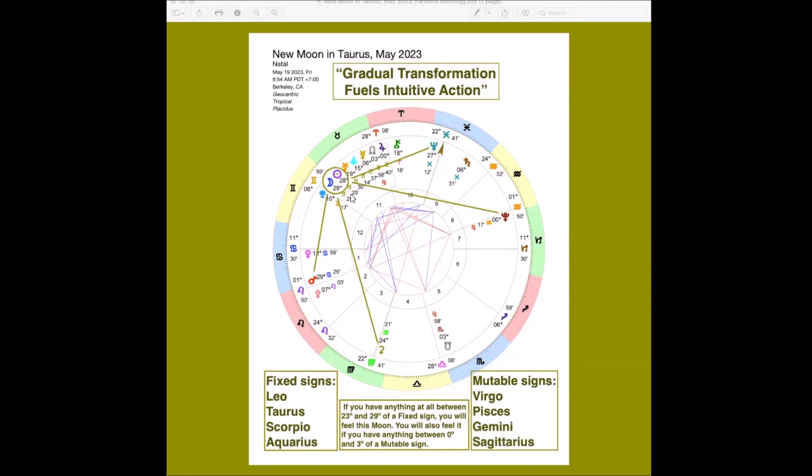Well, the title that we've given this moon is a blend of all of the factors in it. Gradual, well that's the Taurus part. Transformation, that's the Pluto part. Fuels, well that's Ceres, Ceres feeds, Mars does too. Intuitive brings in Neptune and Pisces, and action incorporates that Mars. So it just kind of puts it all together. All those factors are smoothly and easily integrated into this moon.